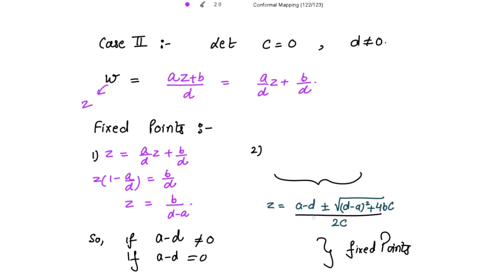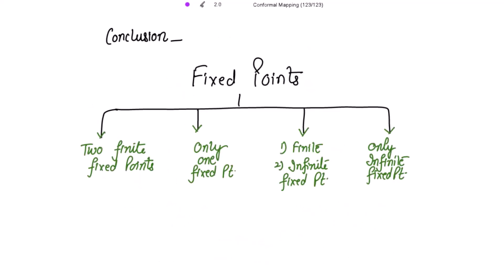From the quadratic roots, if we take c to be zero, we get z equal to infinity for c equal to zero. So we get two fixed points: one is finite and the other is infinite. If a minus d is non-zero, we get the fixed points as b over (d minus a) and infinity. And if a minus d is zero, then z equal to infinity for the fixed points.